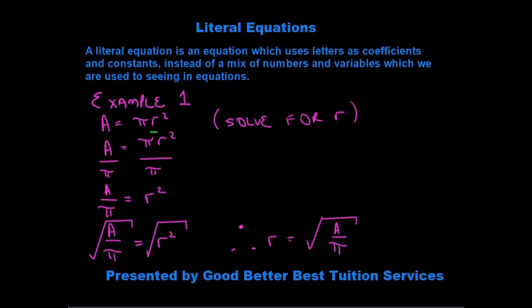So we've gotten rid of the pi and now we have r squared. However, we have not solved for r. We have r squared. The next thing we need to get rid of is the square. And how do we get rid of the square? We get rid of the square by square rooting.